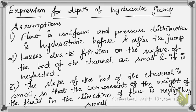We are going to see different expressions for the hydraulic jump. The first expression is for the depth of a hydraulic jump. The first assumption we consider is that the flow is going to be a uniform flow - uniform flow means throughout the length of the channel the depth is constant. The pressure distribution will be hydrostatic before and after the jump, and the losses due to friction we are going to neglect, as well as the component of the weight of the fluid.